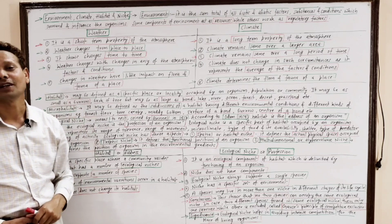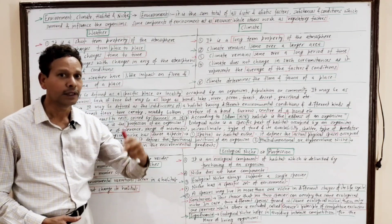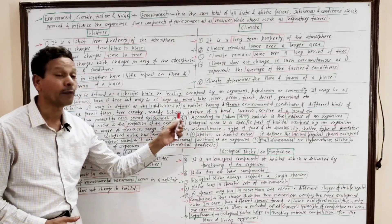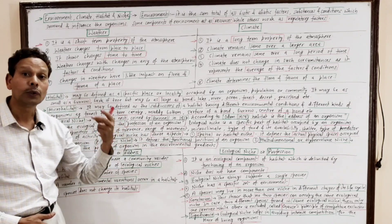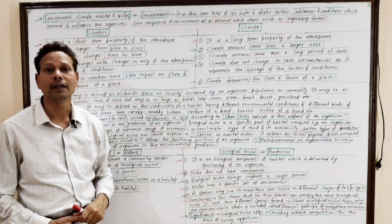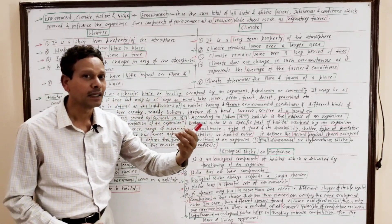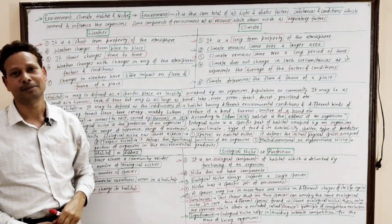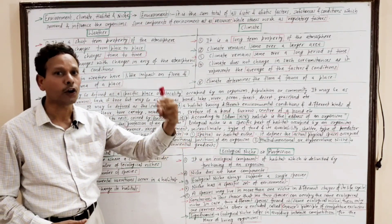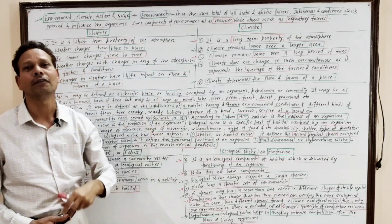A very important term is ecological niche. This term was coined by Grinnell in 1970, and it means 'to nest.' According to Odum, stated in 1959, the habitat is the address of an organism, while the ecological niche is the profession of an organism.